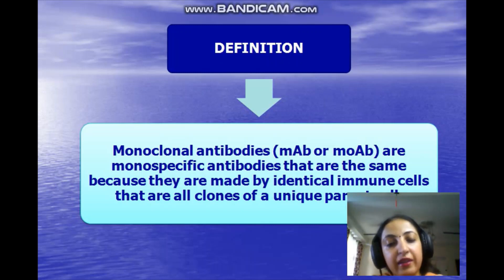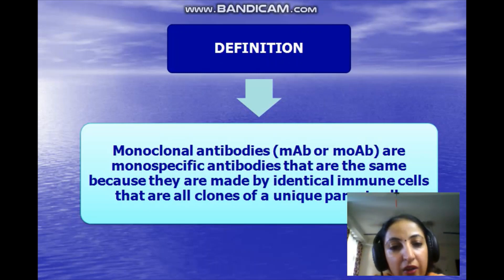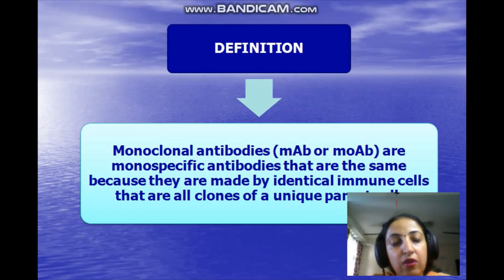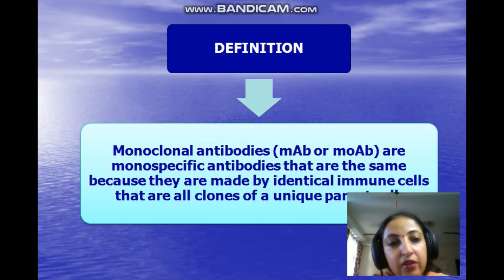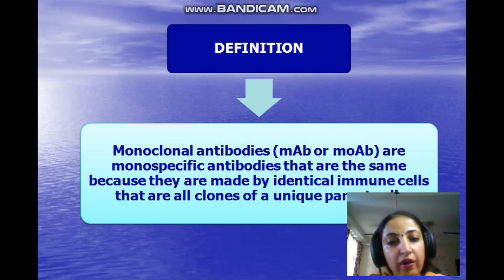When I say identical, I mean that whenever an antigen is introduced into our bodies, our body produces a response in the form of antibodies. We have numerous antibodies against a specific antigen. If we want to isolate a specific antibody only and not the entire clone of different antibodies, this is very much possible, and the antibodies developed by this technique are called monoclonal antibodies — in short, MAB.